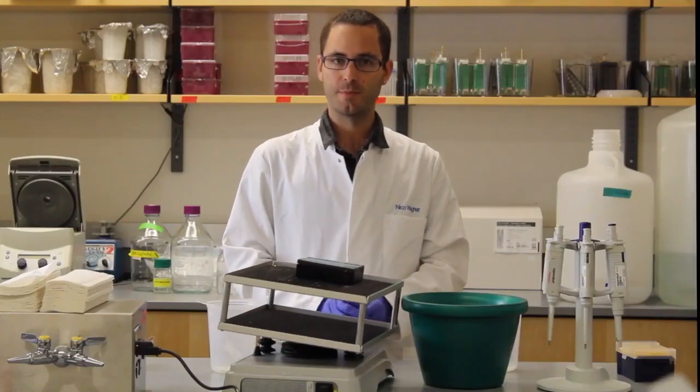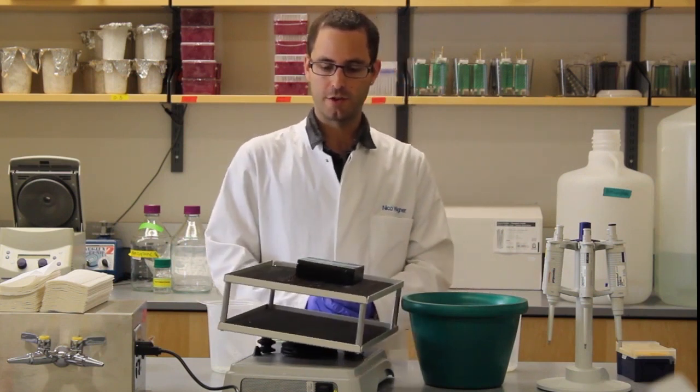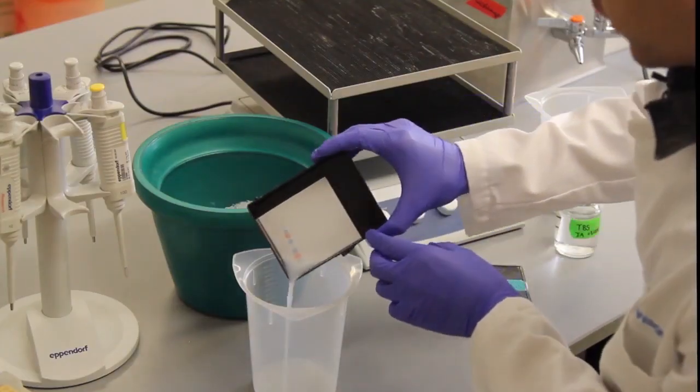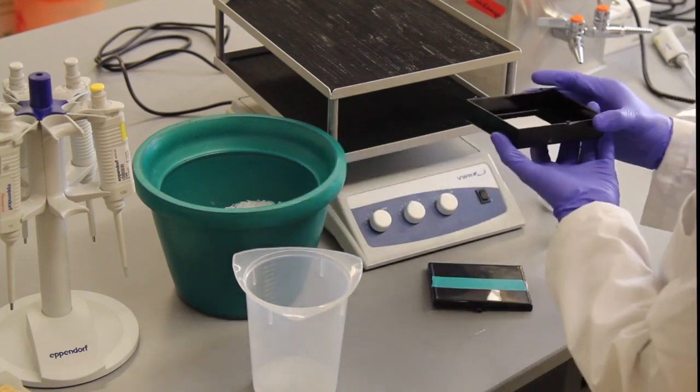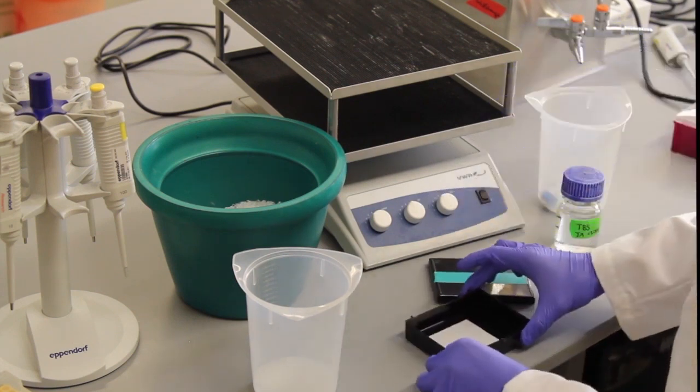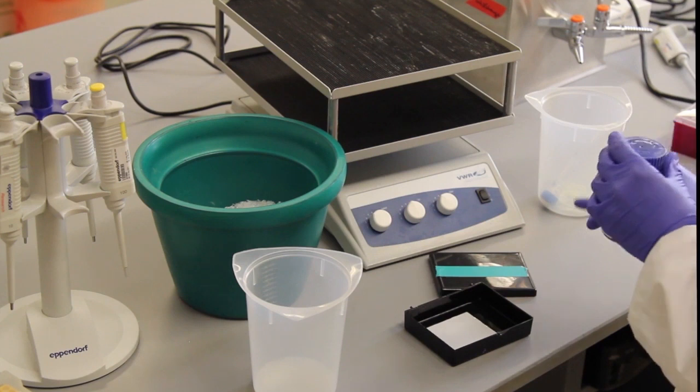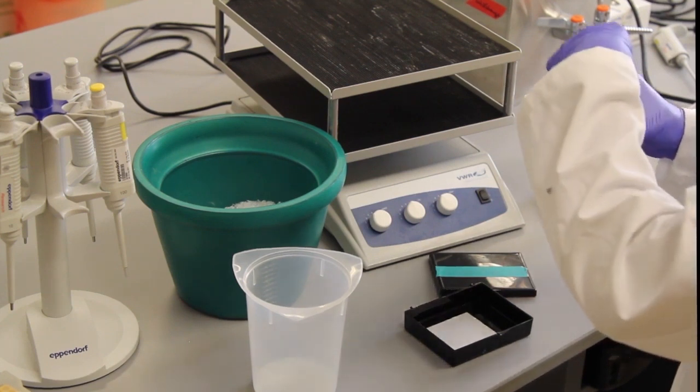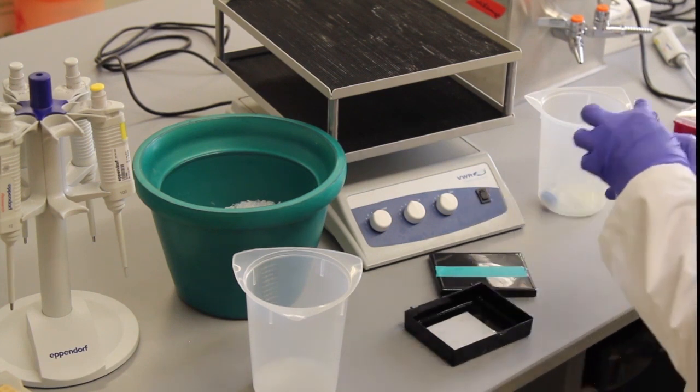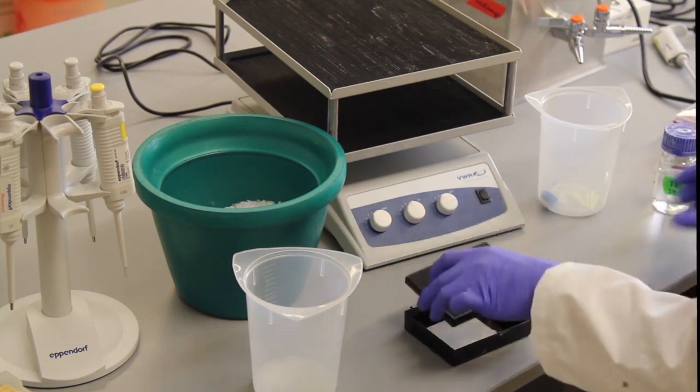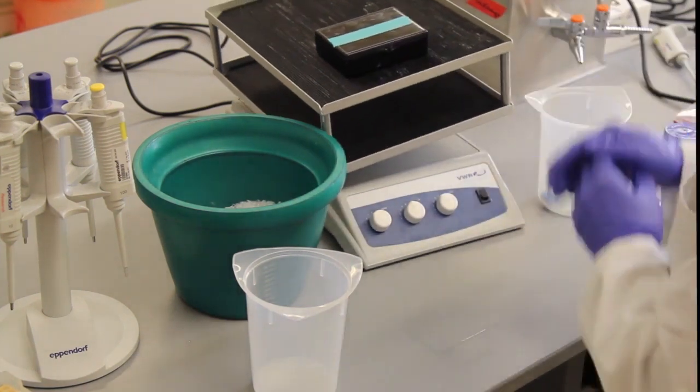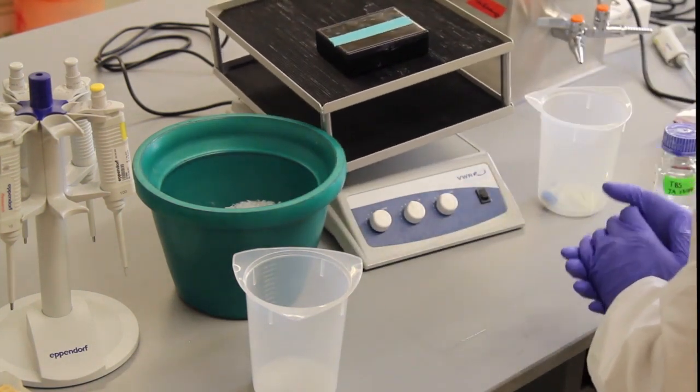The primary antibody has now been incubating for one hour. So I will turn this off, remove it. Again, dump off the supernatant. Certain primary antibodies, you can keep them and reuse them. This particular one, you can only use once, which is why I dumped it off. Prior to adding the secondary antibody, the membrane needs to be washed. We do this with a TBS-T buffer. Just add a little bit on top, just enough to cover the membrane. And add it back on the rocker for five minutes. And this washing step gets repeated two more times after this for a total of three washes at five minutes each.